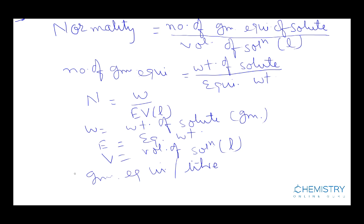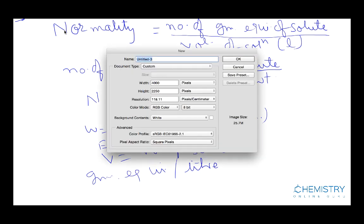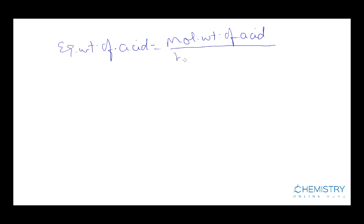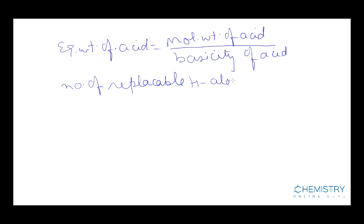How can we calculate equivalent weight? The equivalent weight of an acid is calculated by the formula: molecular weight of acid divided by basicity of acid. Before calculating equivalent weight of acid, it is necessary to know the basicity of acid. The number of replaceable hydrogen atoms present in an acid is equal to the basicity of that acid.